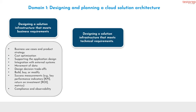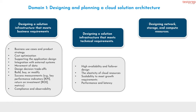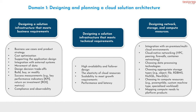Number 2, designing a solution infrastructure that meets technical requirements. It contains: first, high availability and failover design; second, the elasticity of cloud resources; third, scalability to meet growth requirements; fourth, performance and latency. Number 3, designing network, storage, and compute resources. It contains: first, integration with on-premises or multi-cloud environments; second, cloud-native networking — VPC, peering, firewalls, container networking; third, choosing data processing technologies; fourth, choosing appropriate storage types such as object, file, RDBMS, NoSQL, NewSQL; fifth, choosing compute resources such as preemptible, custom machine type, specialized workload; sixth, mapping compute needs to platform products.